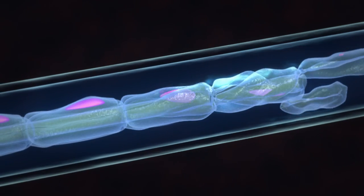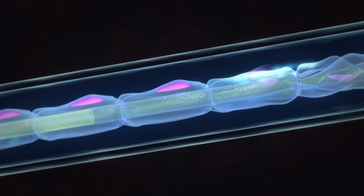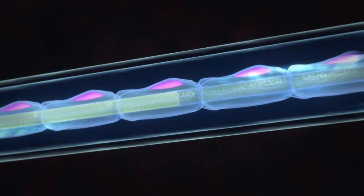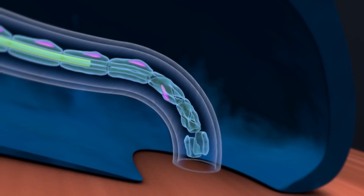Once the debris is cleared and the growth cone is formed, the axon begins to regenerate at a rate of one to two millimeters per day.